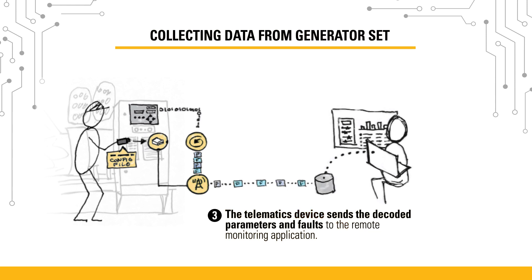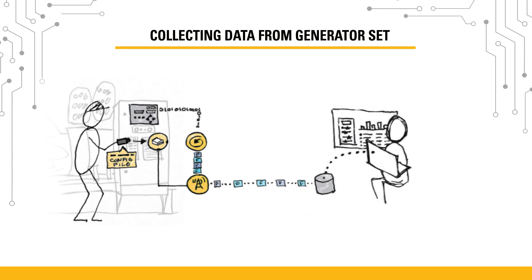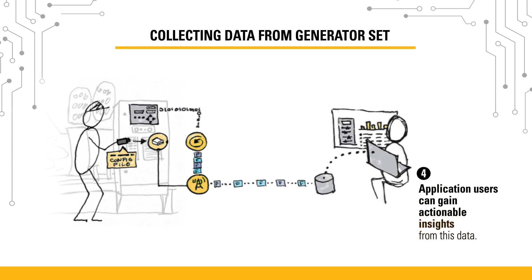The telematics device sends the decoded parameters and faults to the remote monitoring user interface. The remote monitoring user interface pulls the parameters and faults from the telematics device. Application users can then gain actionable insights from the data.